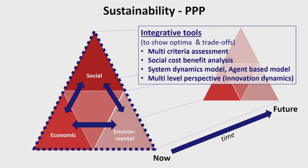A completely different set of tools are the integrative tools. These cover the social, environmental, and economic domains together, and the advantage is that they can show optima or trade-offs between those dimensions. There we see tools like multi-criteria assessment, social cost-benefit analysis, or — when you are more interested in dynamics — system dynamics or agent-based modeling. When you are interested in innovation dynamics, you might go for multi-level perspective.